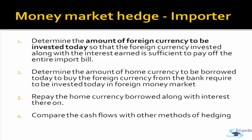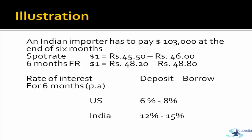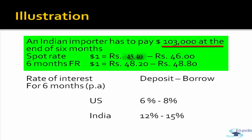Let's do an example. An Indian importer has to pay USD 1,03,000 at the end of six months. The spot rate is 45.40 (bid) and 46 (ask). The six-month forward rate is 48.20 (bid) and 48.80 (ask). The rate of interest in the US: deposit is 6% and borrowing is 8% per annum. In India: deposit rate is 12% and borrowing rate is 15% per annum.